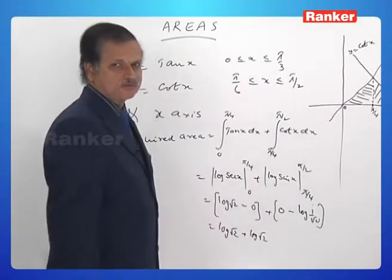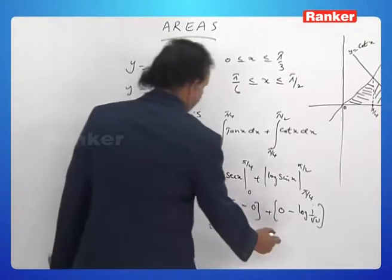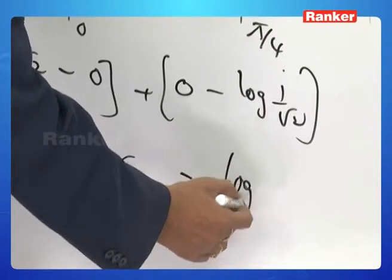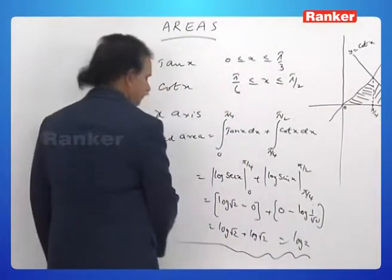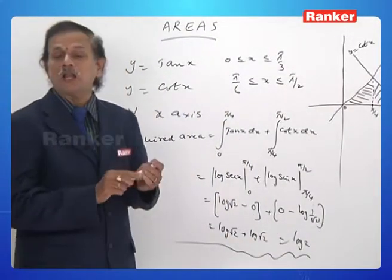Log root 2 plus log root 2 is log of root 2 into root 2. That is nothing but log 2. Hence the answer is log 2.